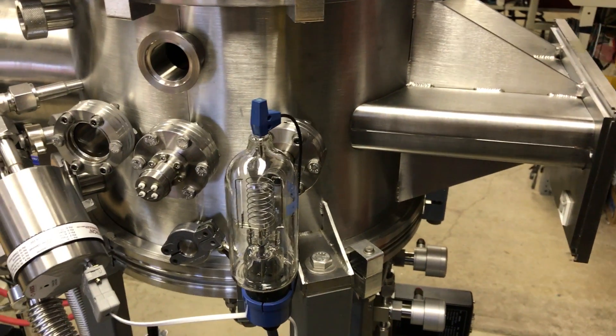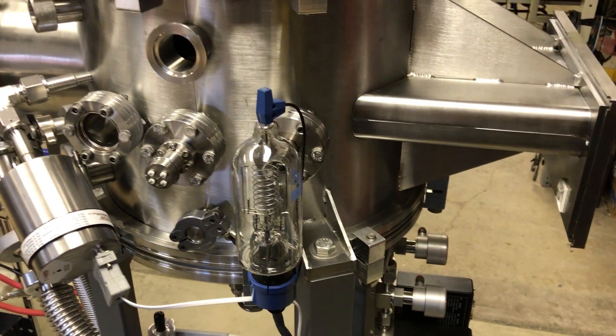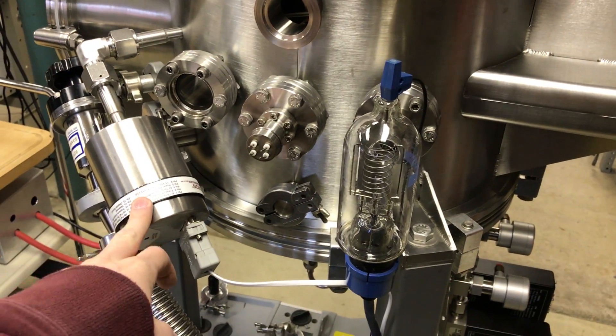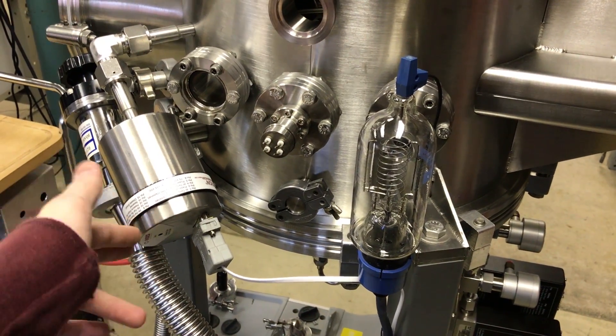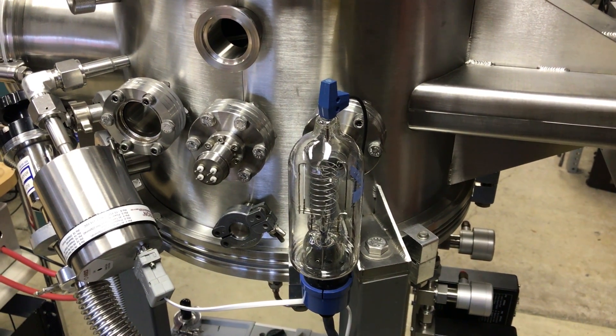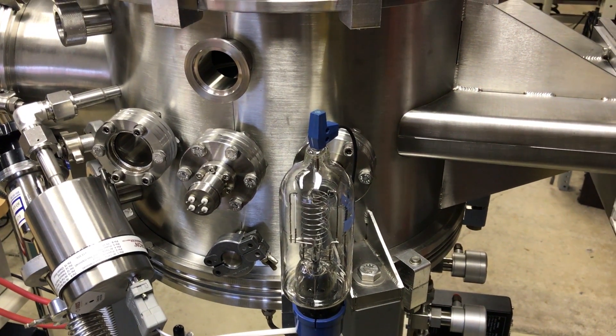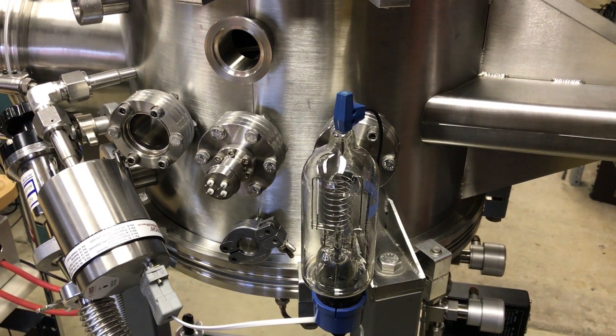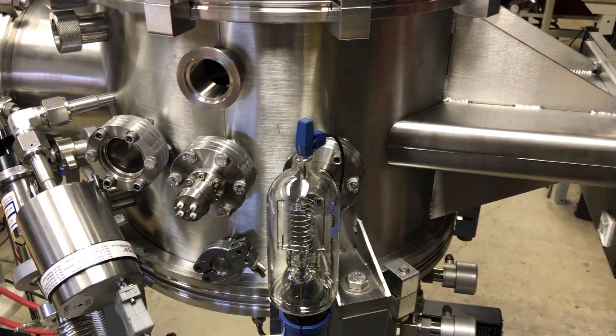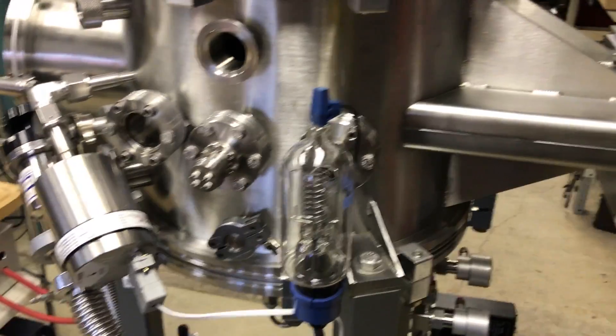There are a ton of different types of gauges and even some hybrid types. There's cold cathode, hot cathode, this is a capacitance transducer sensor. There's Penning gauges, inverted magnetron, thermocouple. If you look on Wikipedia, they give you a good overview of all of those.